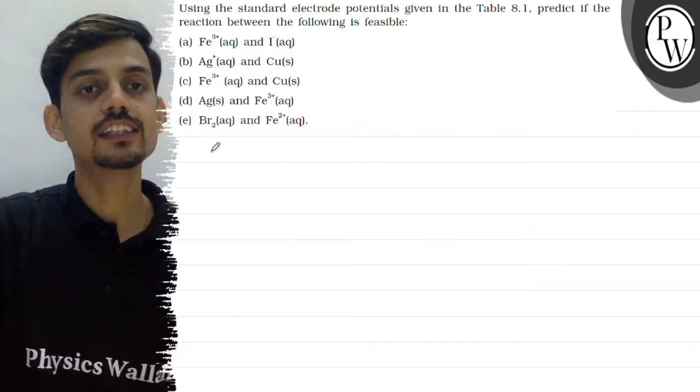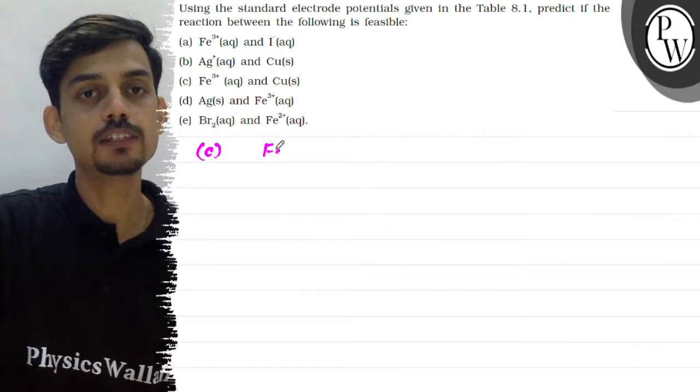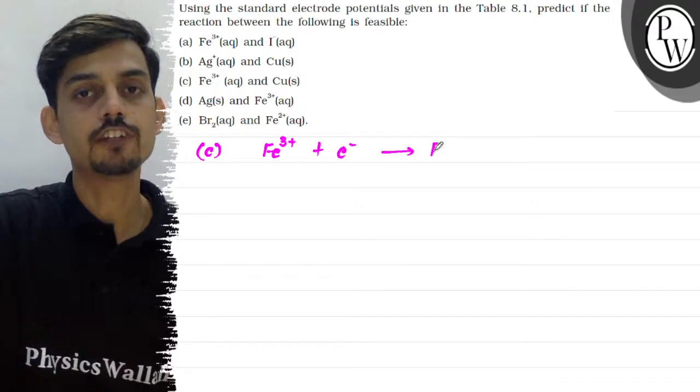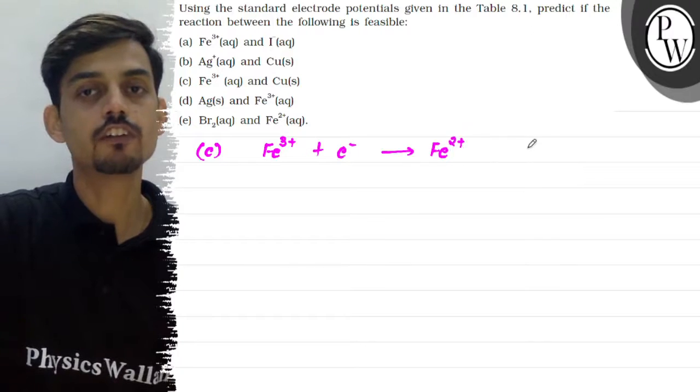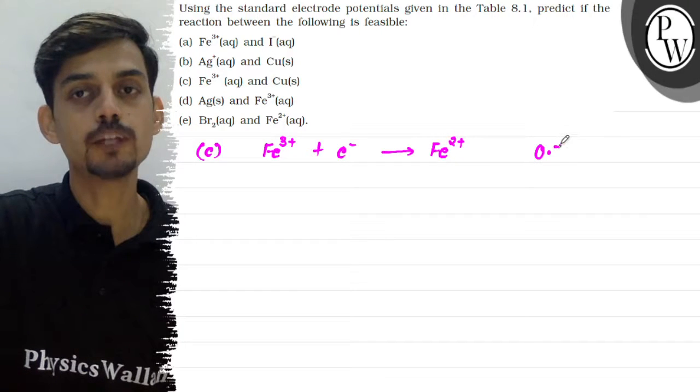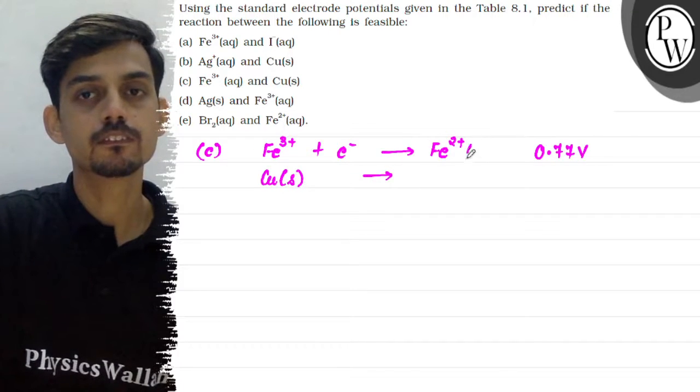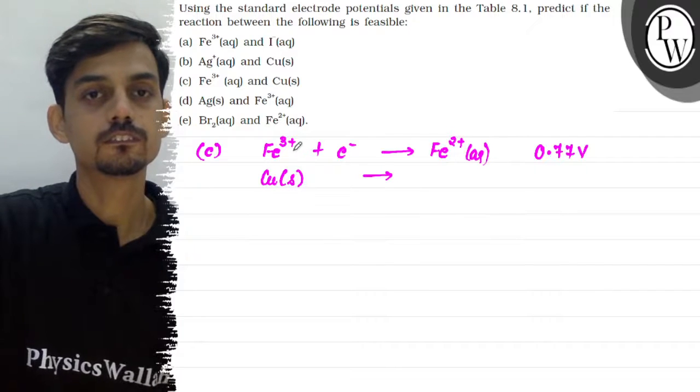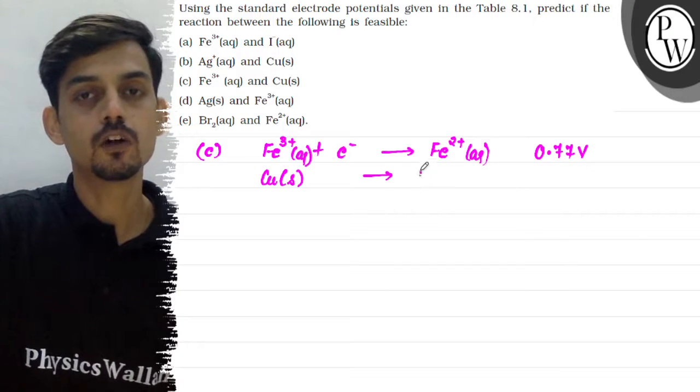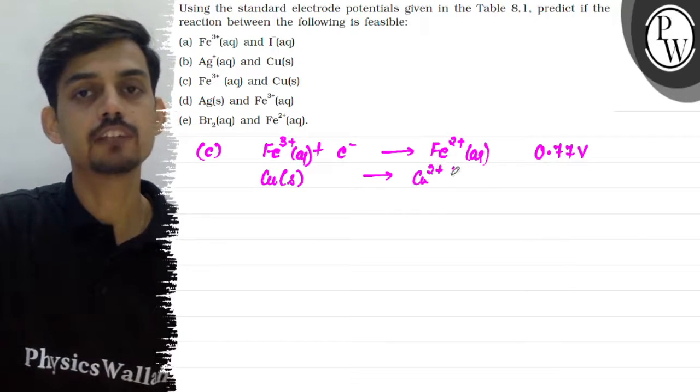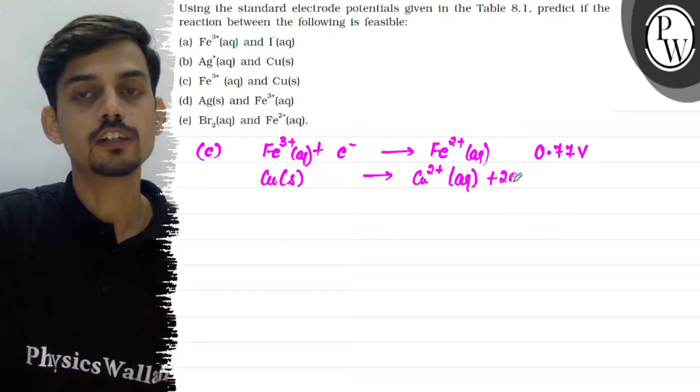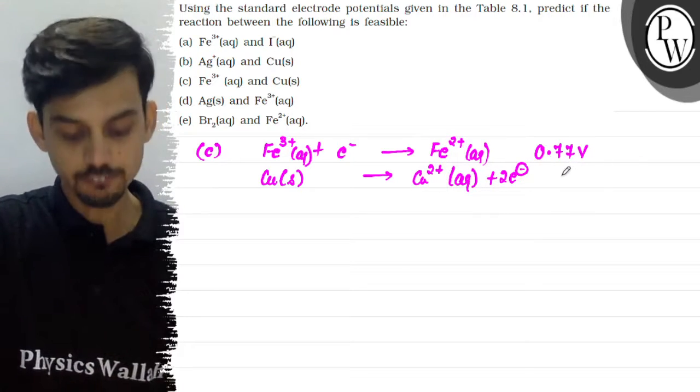Now let's check the third pair. This is Fe3+. Iska reduction hoga Fe2+ me. And for which the potential is given as 0.77 volt. And copper beta oxidation hoga. And it will lose two more electrons.